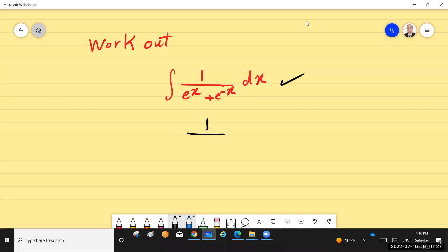e to the x over e to the x. So 1 over e to the x plus e to the negative x. I take this function and multiply by e to the x over e to the x. The answer will be e to the...